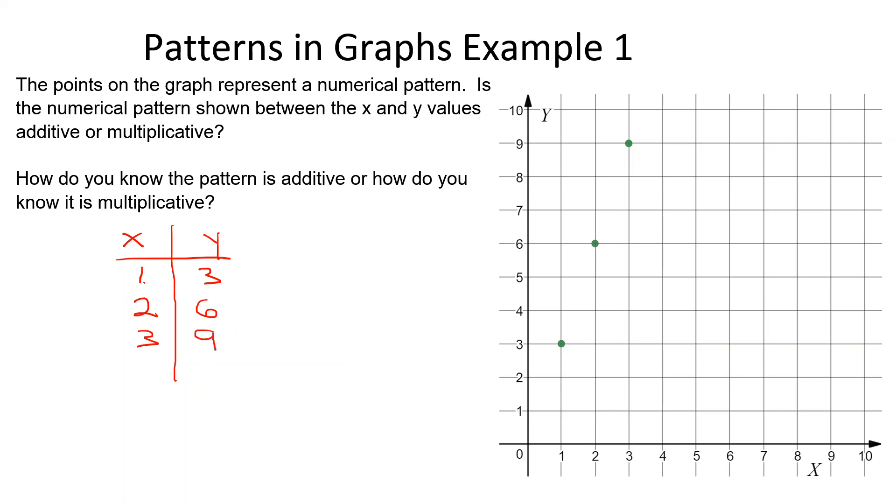We ask ourselves, what do we have to do to x to get to y? From 1 to 3, we could either add 2 or multiply by 3. Let's first see if it's an additive pattern. 1 plus 2 equals 3. Then if we add 2 to the 2, do we end up with 6? The answer is no. So it cannot be an additive pattern.